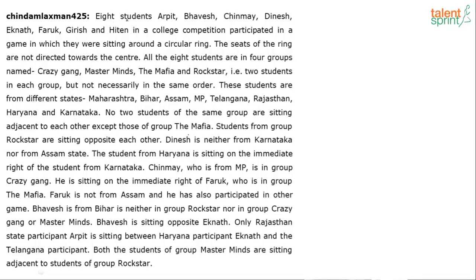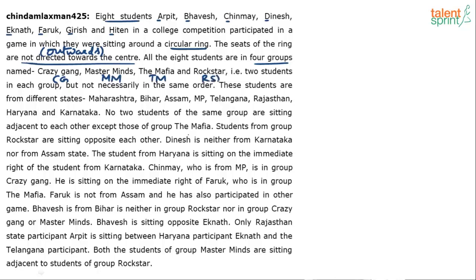So basically it's about eight students. All names start with different letters, so let's call them A, B, C, D, E, F, G, and H. They participated in a circular ring seating game. The four groups are: Crazy Gang (CG), Masterminds (MM), The Mafia (TM), and Rockstar (RS). Eight students divided into four groups means two students in each group, but not necessarily in the same order.